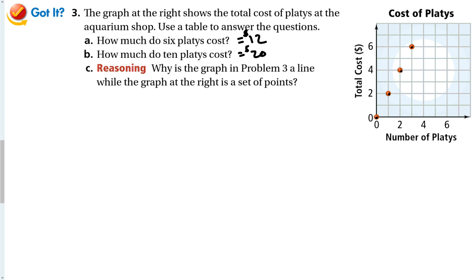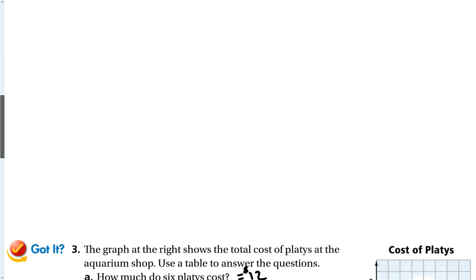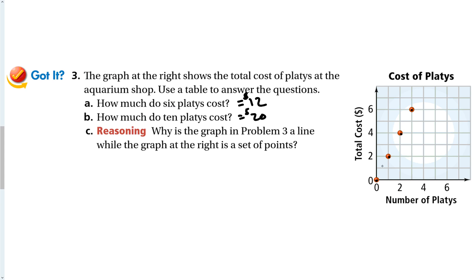And why is the graph in problem three a line? Well, this graph is a set of points. Well, this is discrete, right? You can't buy half a fish, right? Well, this one, right? The fish don't have to be exactly one inch. You can have a fish be half an inch. You know, it doesn't have to be exactly. In this question, they were all exactly even number of inches to make it easier, but they don't have to be. So with this line, any answer is possible. With this set of points, right, we can only have that the fish costs a certain number of dollars.